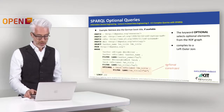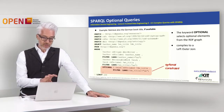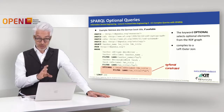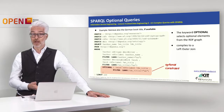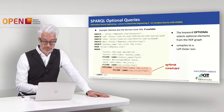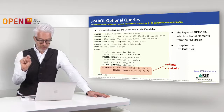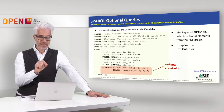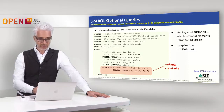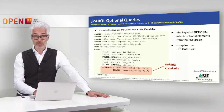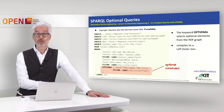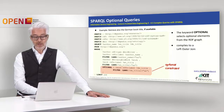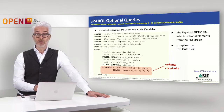For optional constraints there is the keyword OPTIONAL. For example, we want to retrieve English titles but also the German title if available — since not all books necessarily have a German title. We put the graph pattern for the German title (filtering where language is 'de') in curly braces preceded by the keyword OPTIONAL. This makes it an optional constraint, which corresponds to a so-called left outer join, familiar to those who know relational databases.